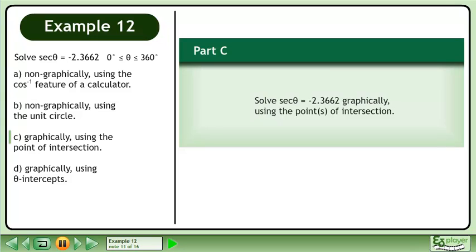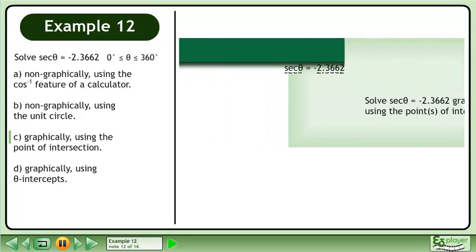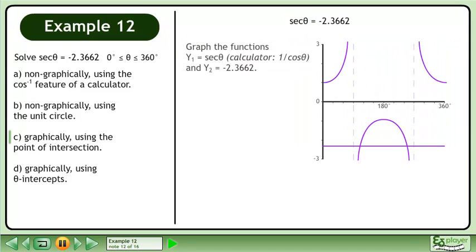In part C, solve secant theta equals negative 2.3662 graphically using the points of intersection. Graph the functions Y1 equals secant theta, which goes into the calculator as 1 over cos theta, and Y2 equals negative 2.3662.